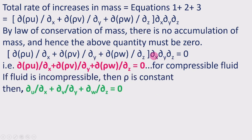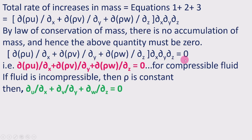Since there is no accumulation of mass, by conservation of mass the total rate of increase must be equal to zero. Therefore we can write: (∂/∂x)(rho·u) + (∂/∂y)(rho·v) + (∂/∂z)(rho·w) = 0, after dividing through by dx·dy·dz.